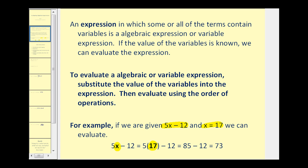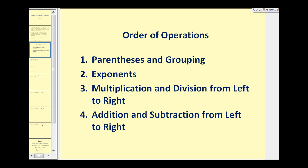Let's review the order of operations before we do a few more examples. There are 4 steps. Number 1, evaluate inside the parentheses or grouping. Number 2, evaluate the exponents. Number 3, multiply and divide from left to right as it occurs. And number 4, add and subtract from left to right.